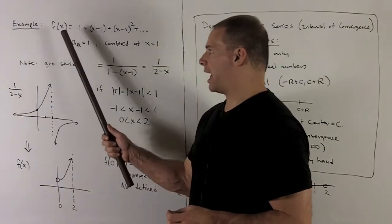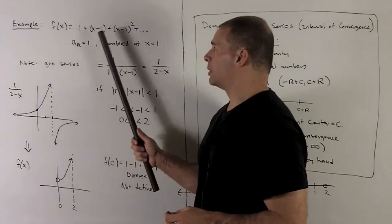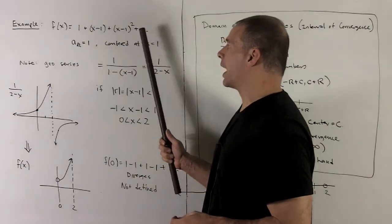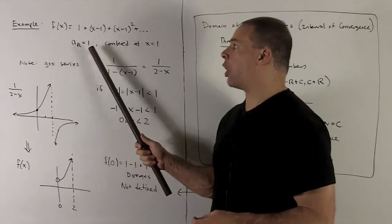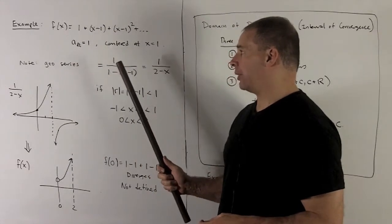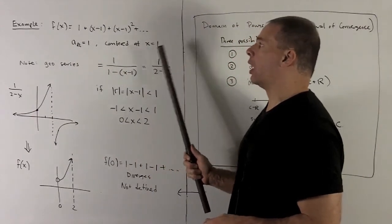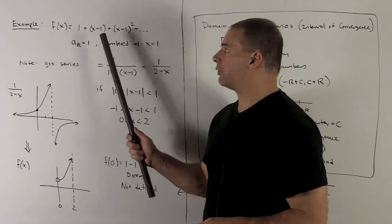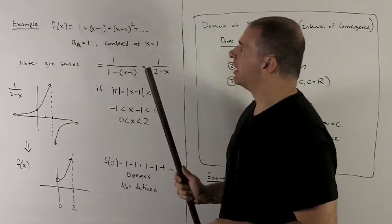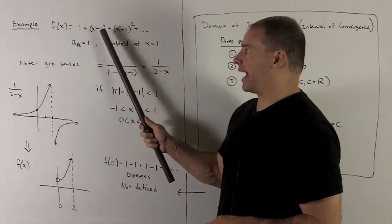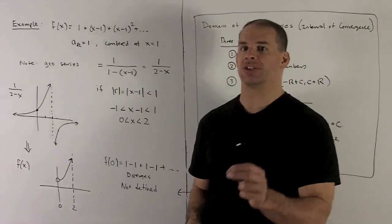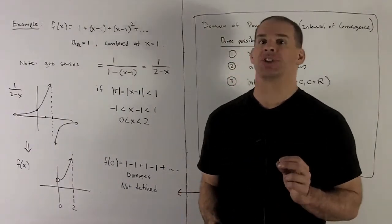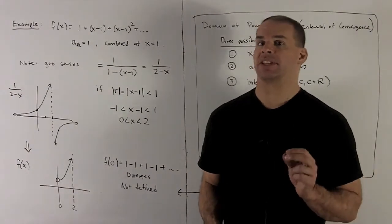Let's try the example f of x equal to one plus x minus one plus x minus one squared and so on. So here, our a sub k is always going to be equal to one and we're going to be centered at x equal to one. Now if we look at this, kind of stare at it, if you let r be equal to x minus one, this looks like one plus r plus r squared plus and so on. Looks like a geometric series. So, we can try to sum this series.